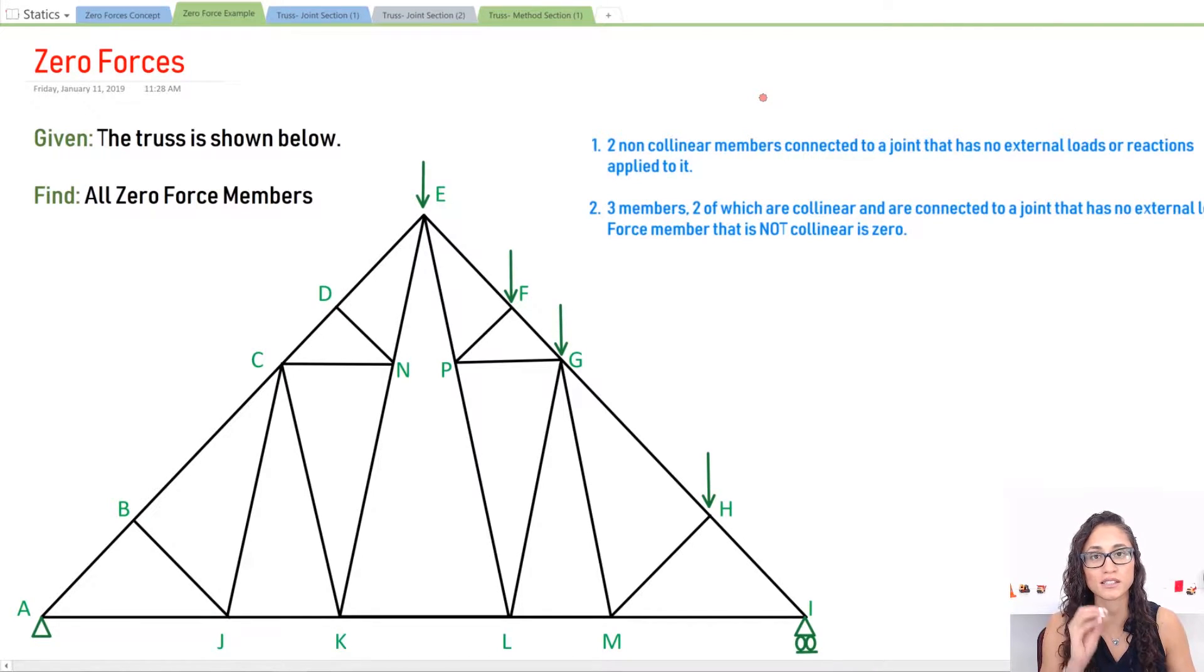Okay, so let's start with joint B. At joint B we have three members. We're going to apply concept 2 because I have three members: BA, BC, and BJ. I have no external force. Now BA and BC are on the same line of action—same line. Now BJ is not. So the non-collinear member is going to be zero. Remember, it's not collinear—that's the member that's going to be zero. So BJ is going to be zero.